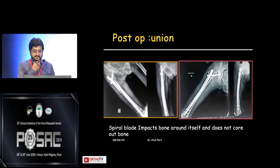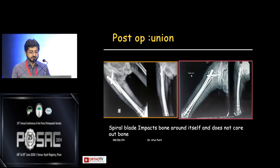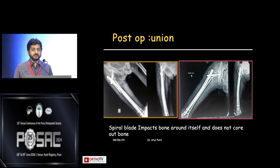This is his immediate post-op result. The spiral blade impacts the bone around itself and does not core out the bone. It is very useful in the elderly age group, and you can see a completely united fracture even at 93 years old.